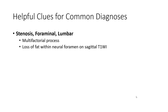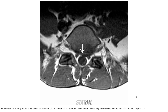Foraminal lumbar stenosis is also a multifactorial process, with loss of fat around the neural foramen on sagittal T1WI. Axial T1WI MRI shows the typical pattern of lumbar broad-based disc where the disc is diffuse, with foraminal narrowing indicated by the solid arrow. Disc extension beyond the vertebral body margin is diffuse with no focal protrusion.